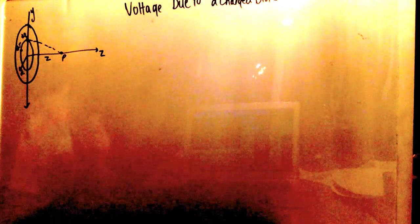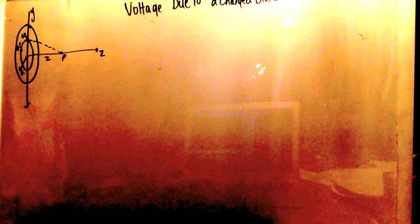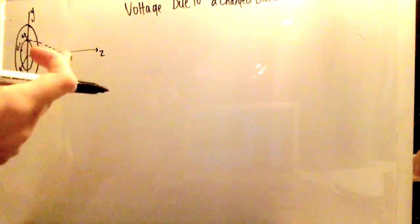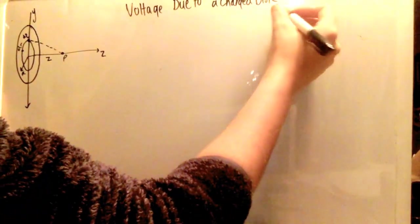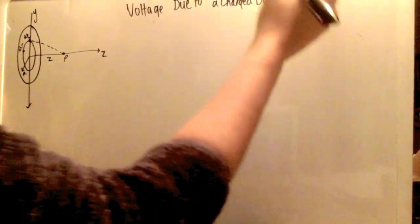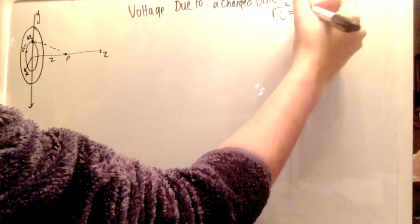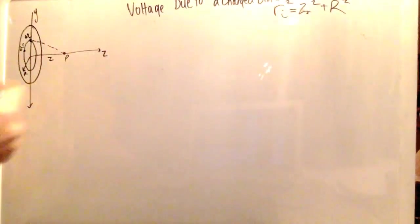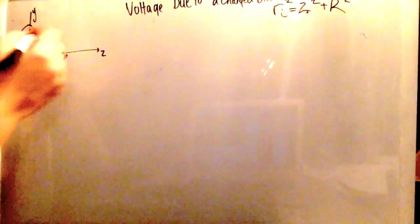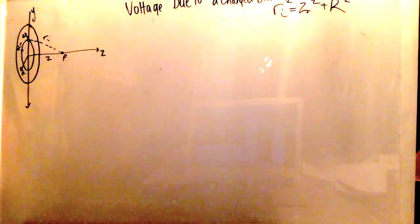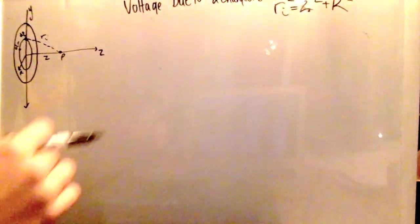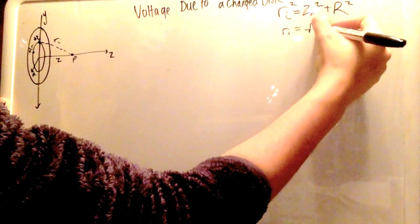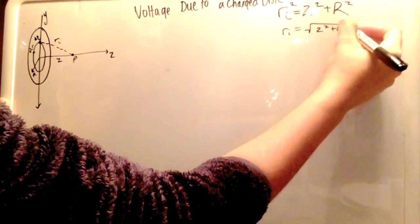So over here we're going to be doing the derivation of a voltage due to a charged disk. The first equations that you need: you need to know the equation for ri is equal to, ri squared is equal to z squared plus r squared. ri being this dotted line right here, r being the big radius. Then you can take the square root of that, z squared plus r squared.